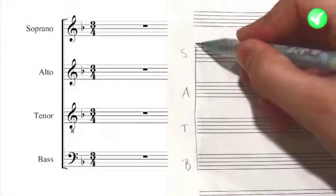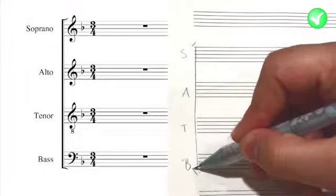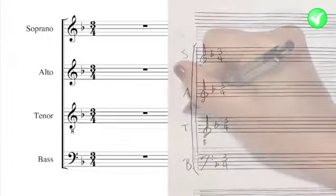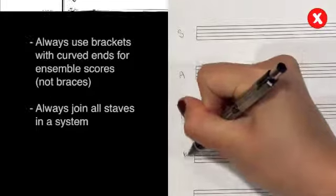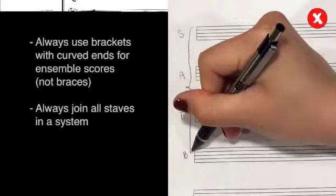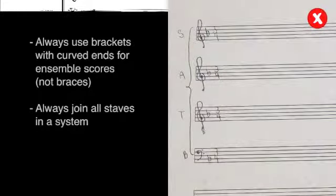In ensemble scores, each system always has a bracket with curved ends at the beginning, as well as a straight vertical line joining all the parts. The staves in this system are not joined by a line. We also forgot that ensemble scores use brackets with curved ends, and not braces.